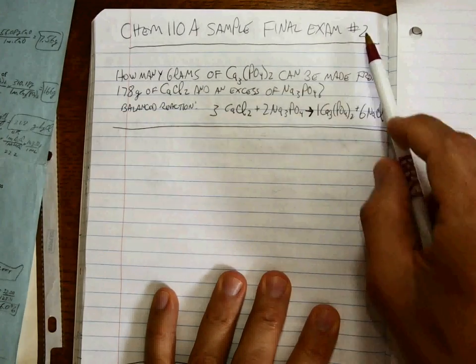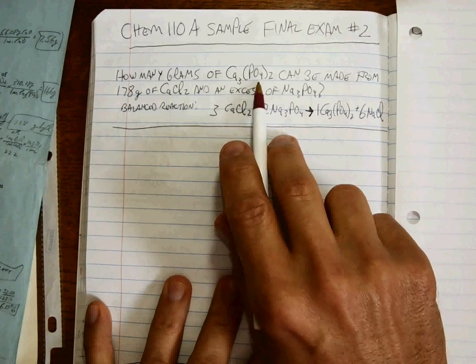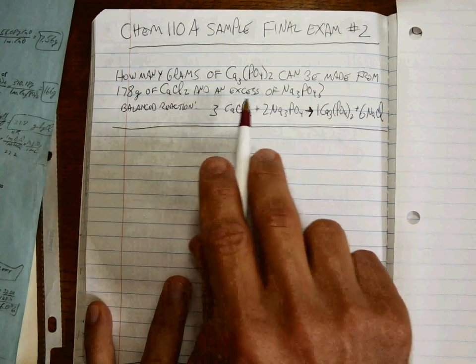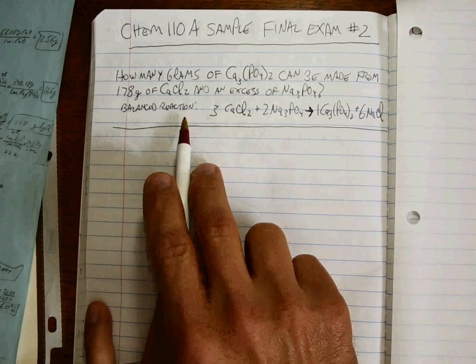Sample final exam question number two. How many grams of calcium phosphate can be made from 170 grams of calcium chloride and an excess of sodium phosphate? There's the balanced equation. It's already balanced.